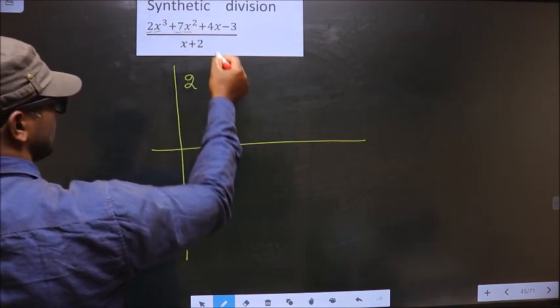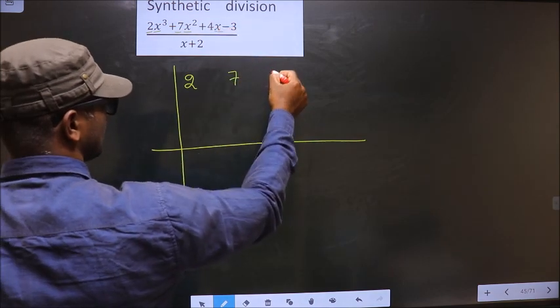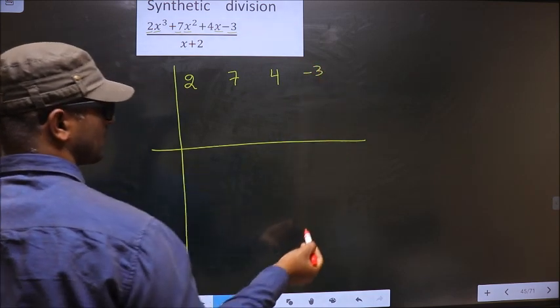Next, x squared coefficient, 7. Next, x coefficient, 4. And finally the constant, minus 3. Okay.